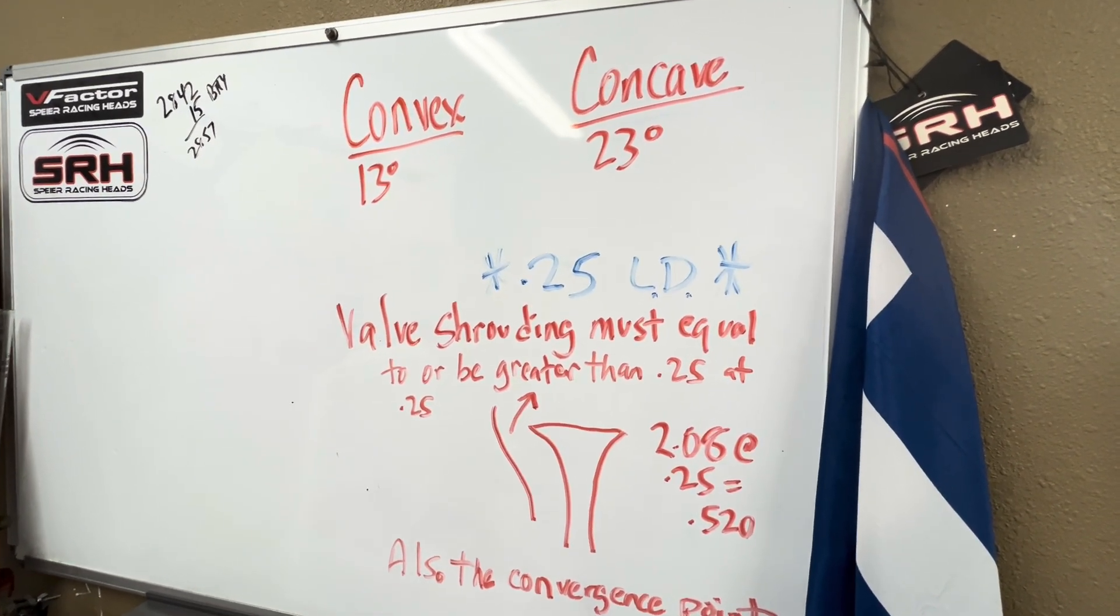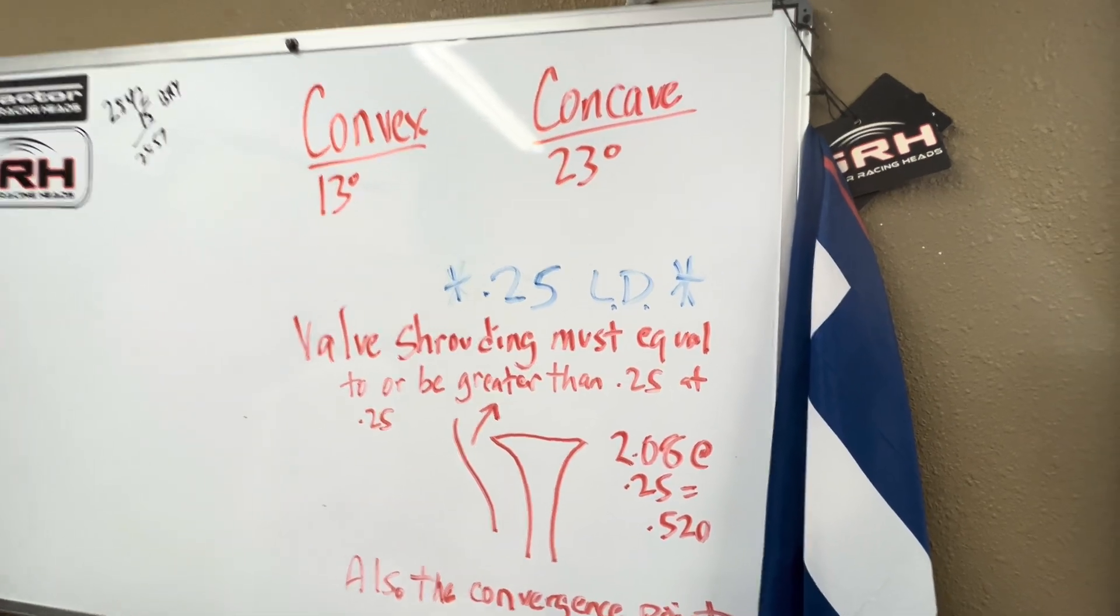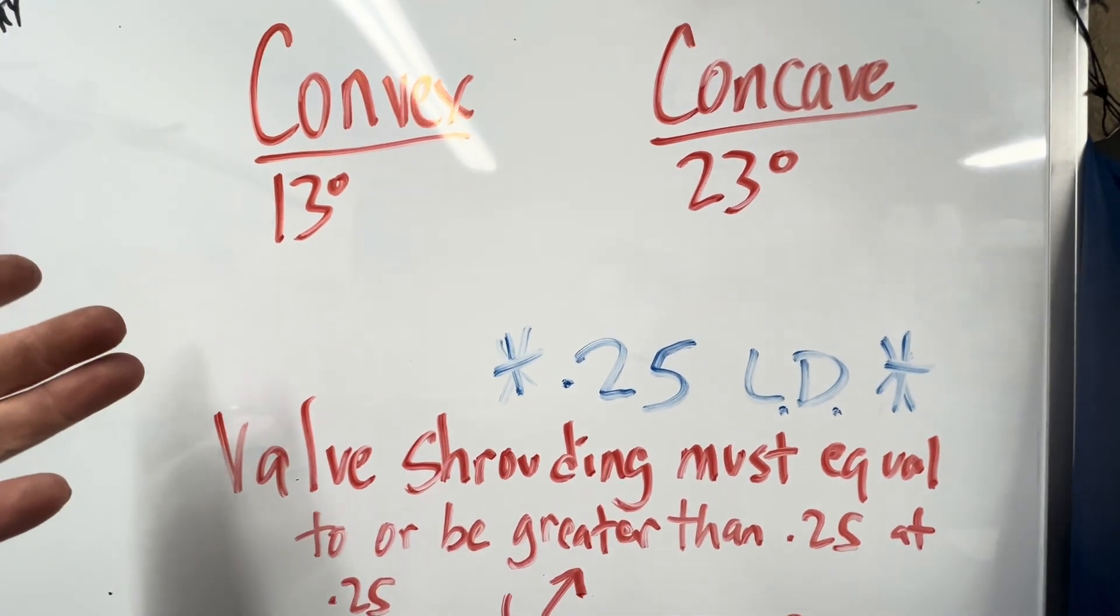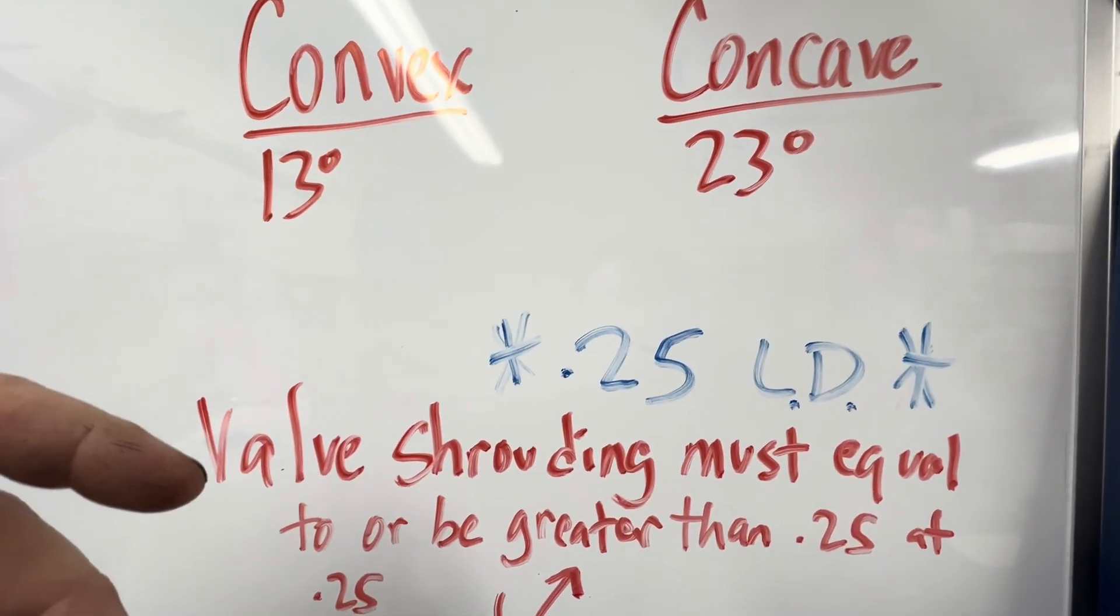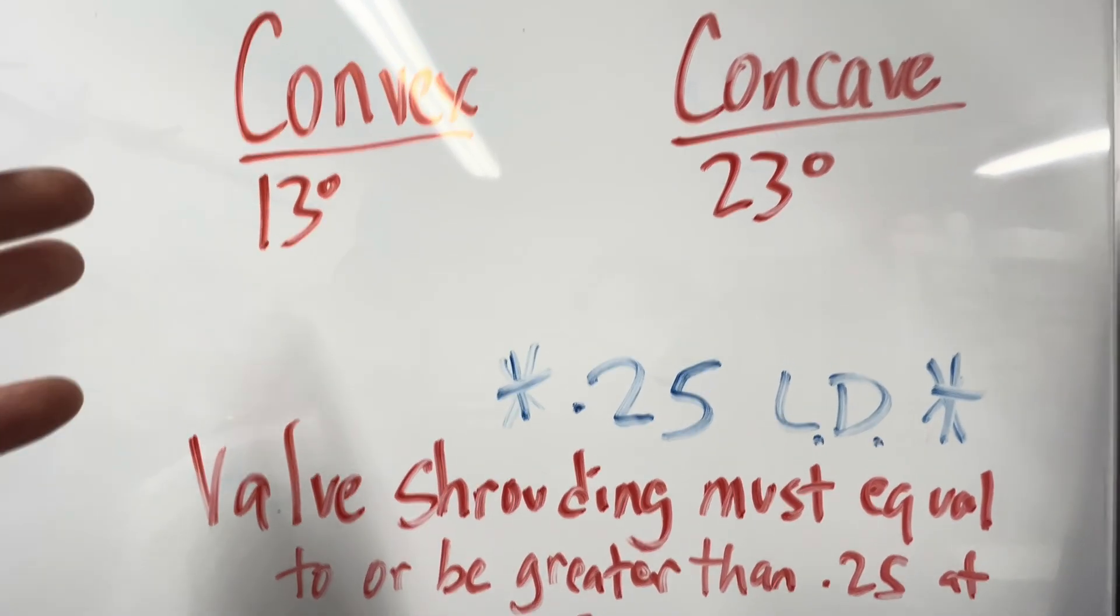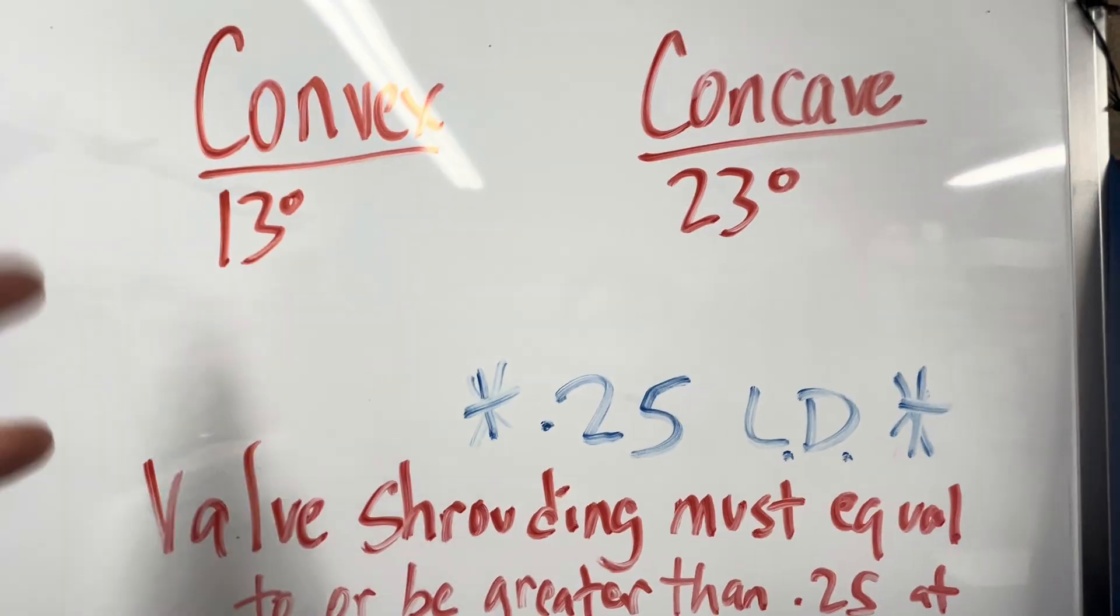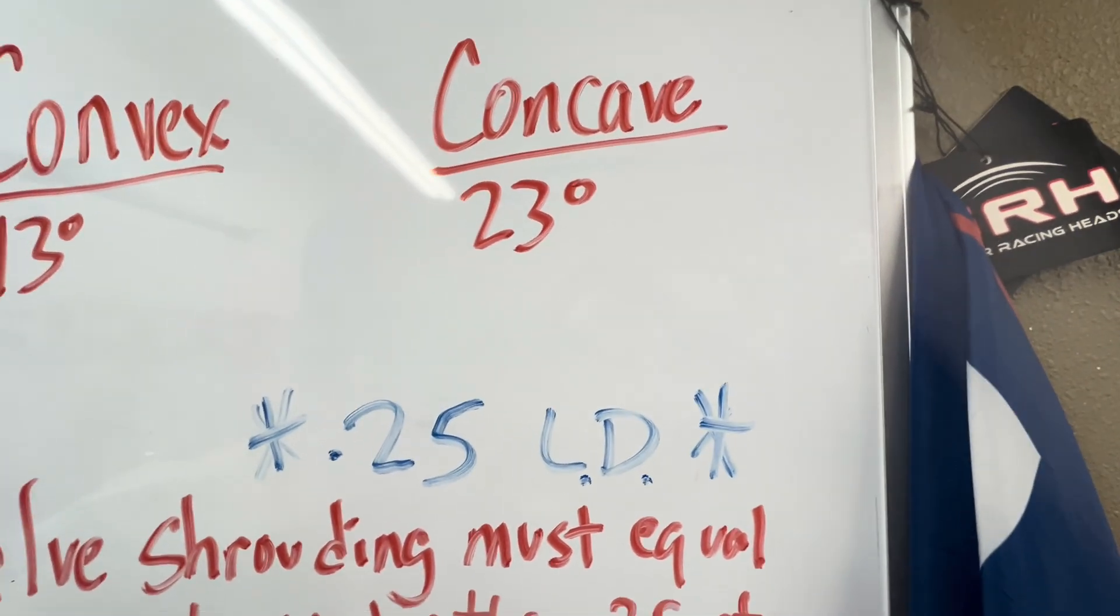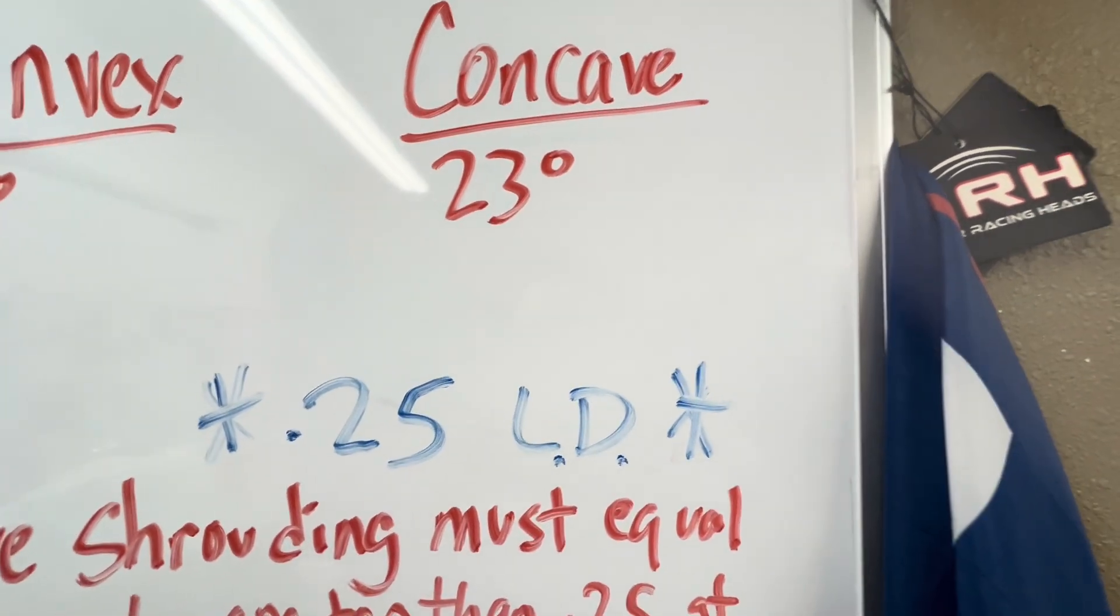Basically, there are two types of chambers that we're dealing with. A convex chamber would be like a 13 degree, 10 degree, some of the very shallow valve angles. A concave chamber, which would be like a standard 23 degree Chevy, standard big block, 20 degree Ford.